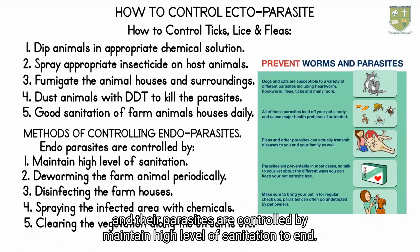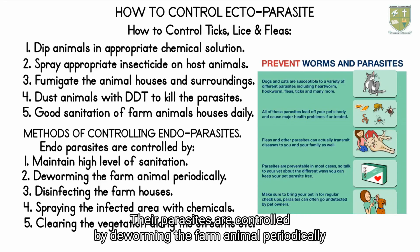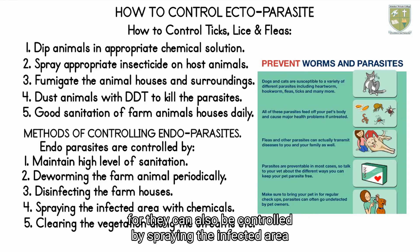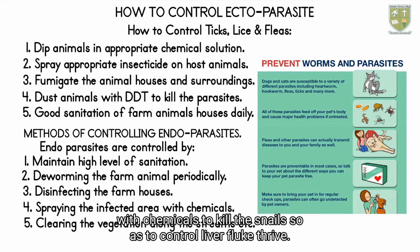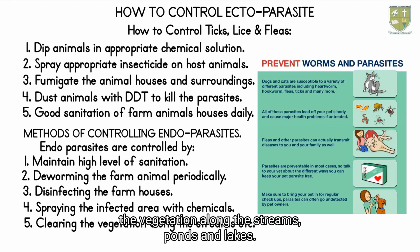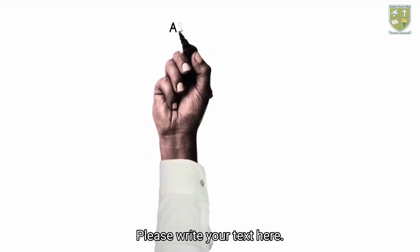Methods of controlling endoparasites: one, maintaining a high level of sanitation; two, deworming the farm animals periodically; three, disinfecting the farm houses; four, spraying the infected area with chemicals to kill snails so as to control liver fluke; five, clearing the vegetation along streams, ponds and lakes.